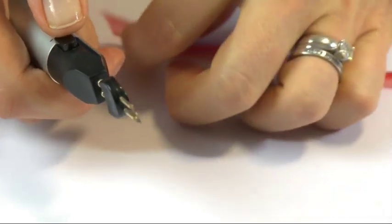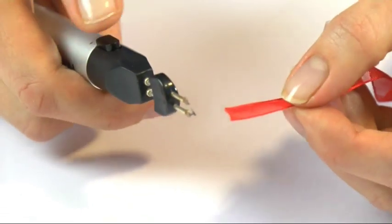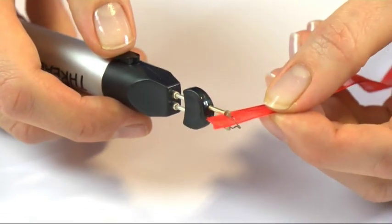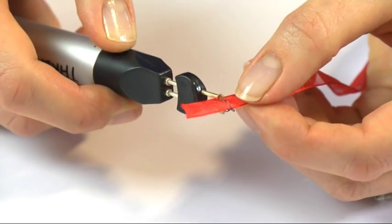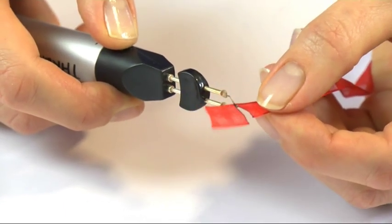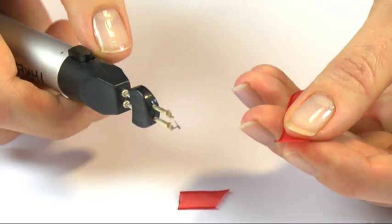Or, you can use it on the ribbon, and because it has this little gap in here, you've got plenty of space to put the ribbon in. Press the button, and just gently drag it through, and it stops any kind of fraying.